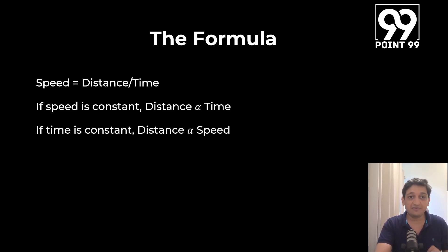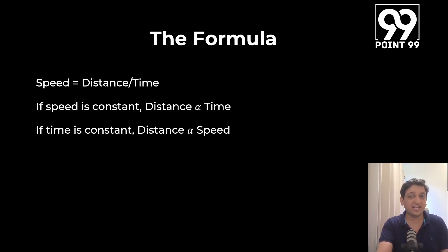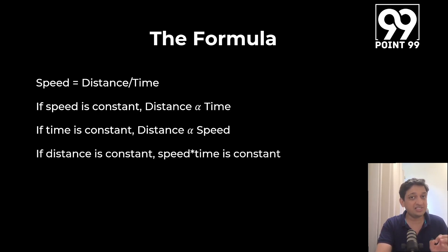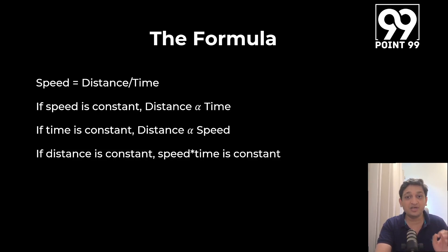The second relationship is if time is constant, then distance is directly proportional to speed — if you travel for the same finite amount of time at a higher speed, you will go further in distance. The third relationship, which is the most important one, is if the distance is constant, then speed multiplied by time will be constant, which means speed is inversely proportional to time. If speed increases, the time taken goes down.